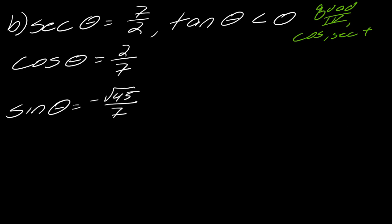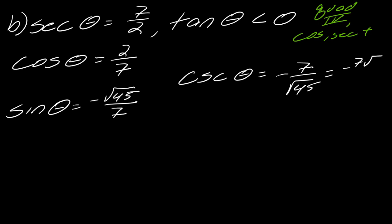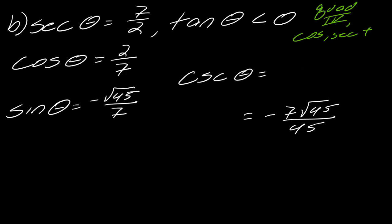Now I can get cosecant of theta, which equals negative 7 over the square root of 45 via the reciprocal identity. Rationalizing that gives negative 7 square root of 45 over 45.